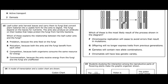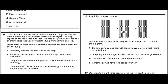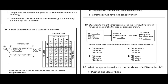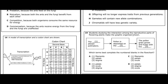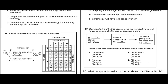For question eighteen, the answer is H. Crossing over involves mixing alleles and mixing genetic information, which creates genetic variety.